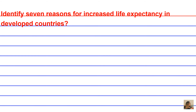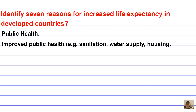The next area that has increased life expectancy is public health — improved public health. So better sanitation, more regulations for the water supply, more regulations for housing and apartment buildings, and just an overall better standard of living for so many people.